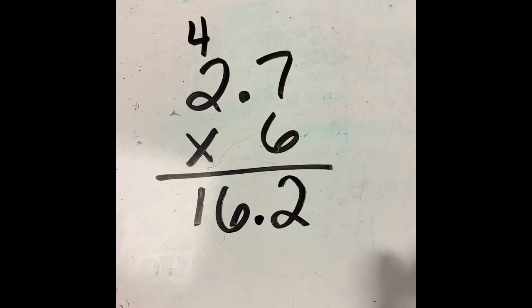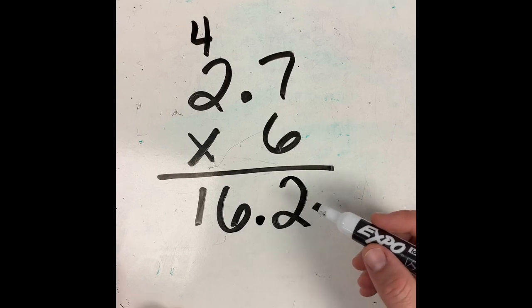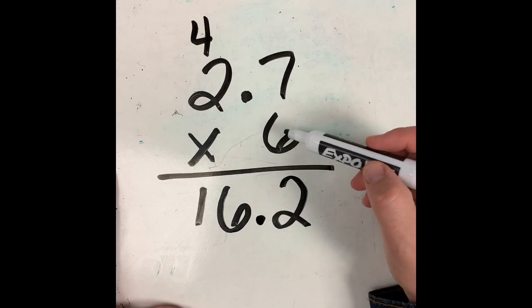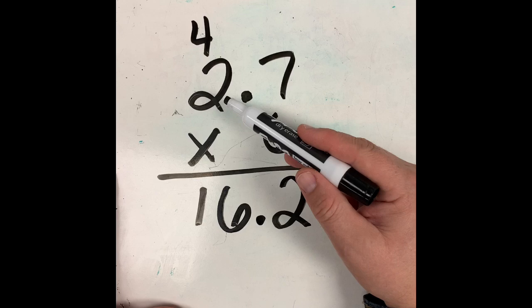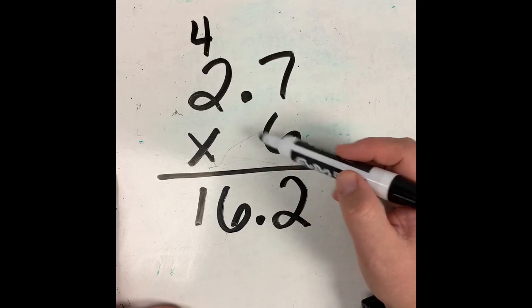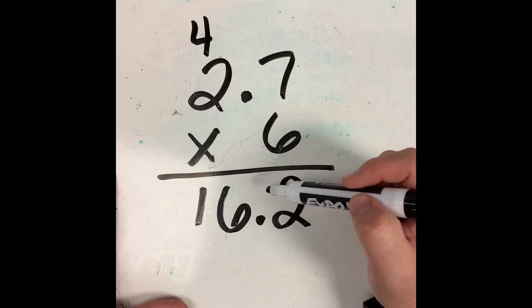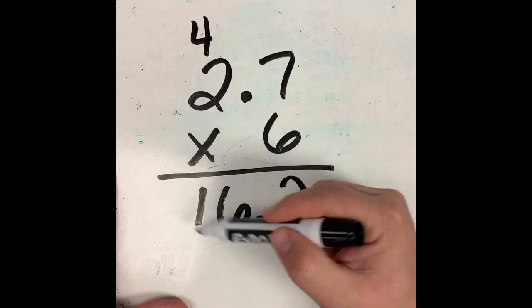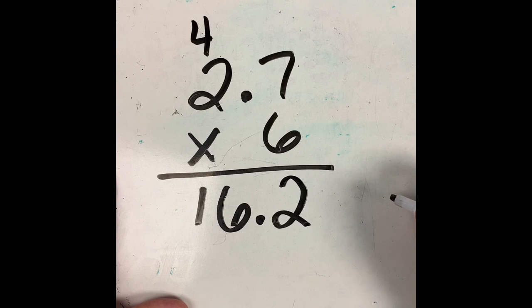Now, we can double check this a little bit. 6 times 2 would be 12, and 6 times 3, which is where this number falls, right in between the two, 6 times 3 would be 18. Our number should be between 12 and 18, and as you can see, it is right in the middle.